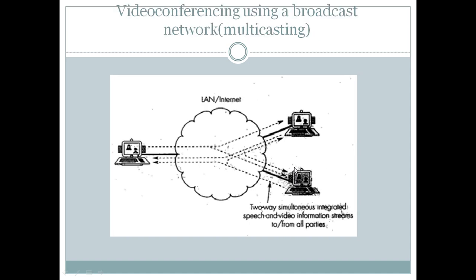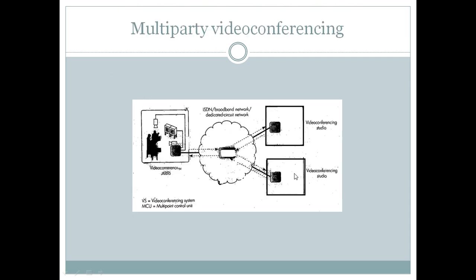And next we have, this is also a video conferencing where we have more than two people involved. But here, instead of a MCU like in the previous case, we have a multicasting network. That is, we do not have an MCU here. The internet itself transfers the information to other users. Now this is called as a multiparty video conferencing.